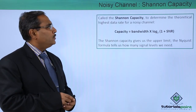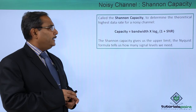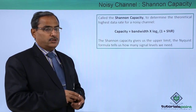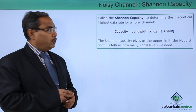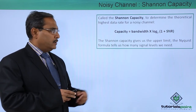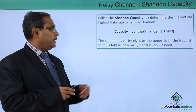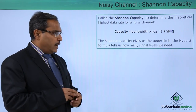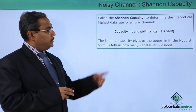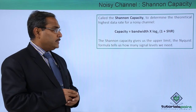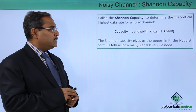Shannon's capacity is used to determine the theoretical highest data rate for a noisy channel. The formula is: Capacity = Bandwidth × log₂(1 + SNR). That is the equation used to calculate the capacity of the channel. Shannon's capacity gives us the upper limit, and the Nyquist formula tells us how many signal levels we need.